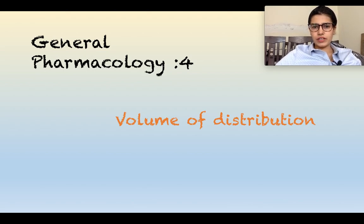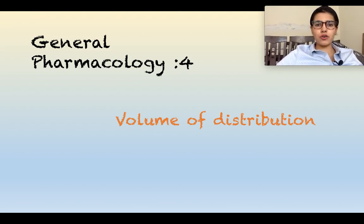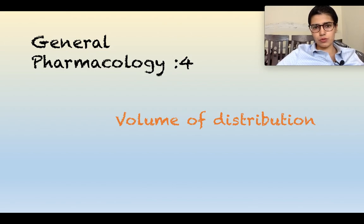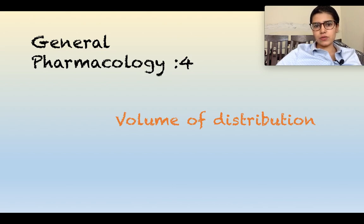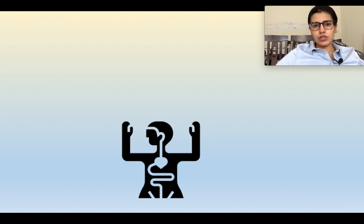Welcome to my channel. Today the topic of discussion is volume of distribution. This is the sequel to the plasma protein binding lecture which we have already discussed — this is the fourth lecture of pharmacokinetics. If we want to simplify the term volume of distribution, what we mean is that when the drug is taken inside the body after absorption, the drug gets distributed inside our body.